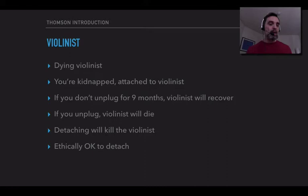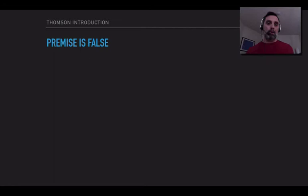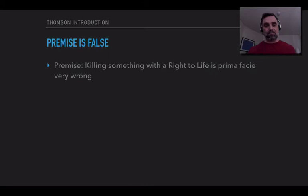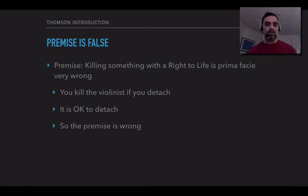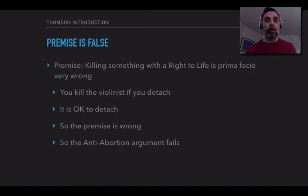Nonetheless, Thompson thinks it's very clear that it's ethically okay for you to detach yourself. You do not have an obligation to stay attached to the violinist. So she thinks that the premise — killing something with a right to life is prima facie very wrong — is false. You will kill the violinist if you detach yourself, but it's okay to detach yourself, and therefore the premise is mistaken. That means the anti-abortion argument fails, because it relies on a premise that says killing something with a right to life is prima facie very wrong — but here we have a straightforward counterexample to that. Killing the violinist is not prima facie very wrong.